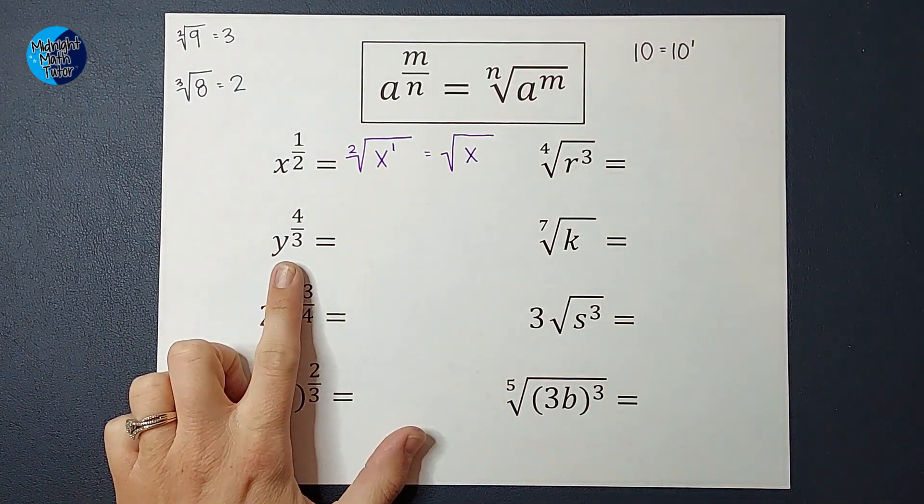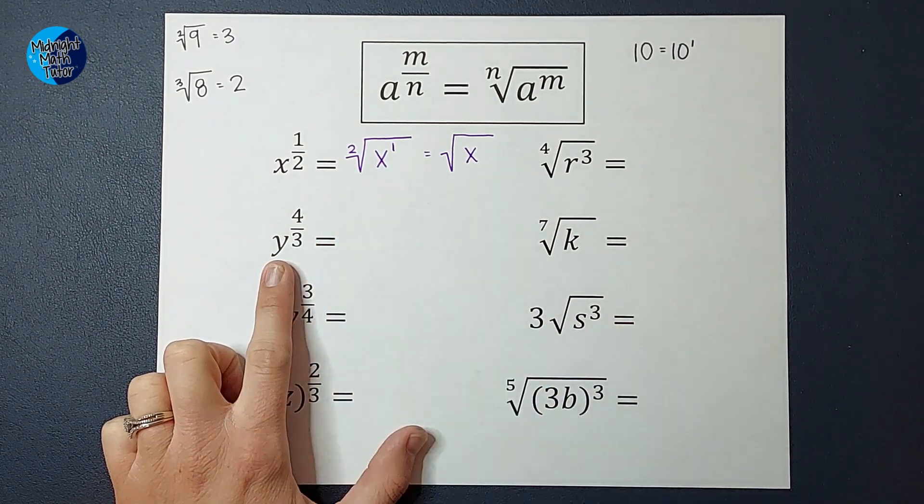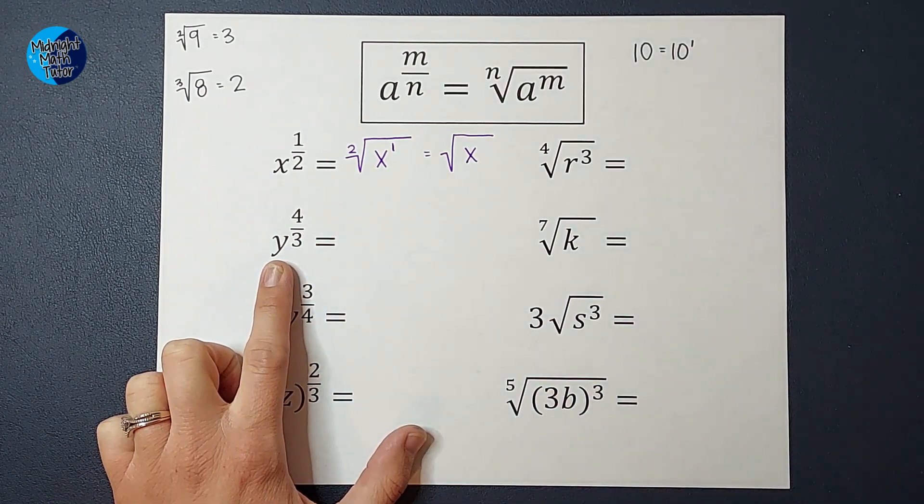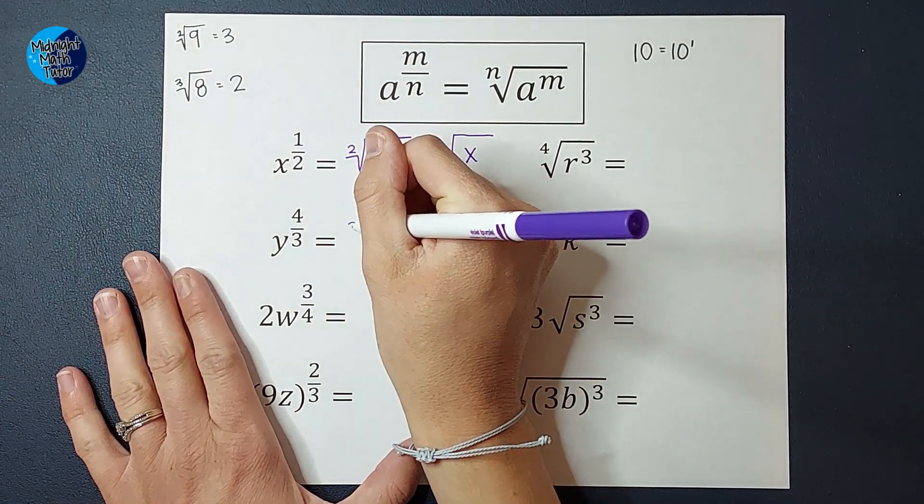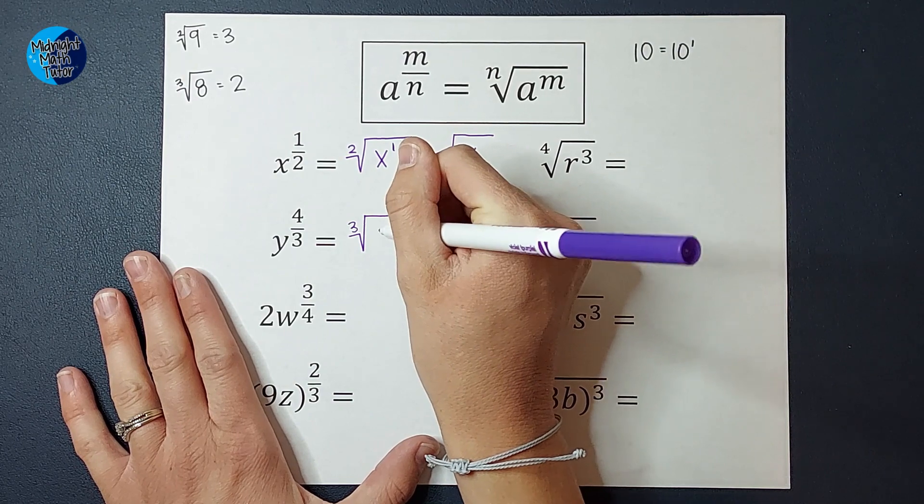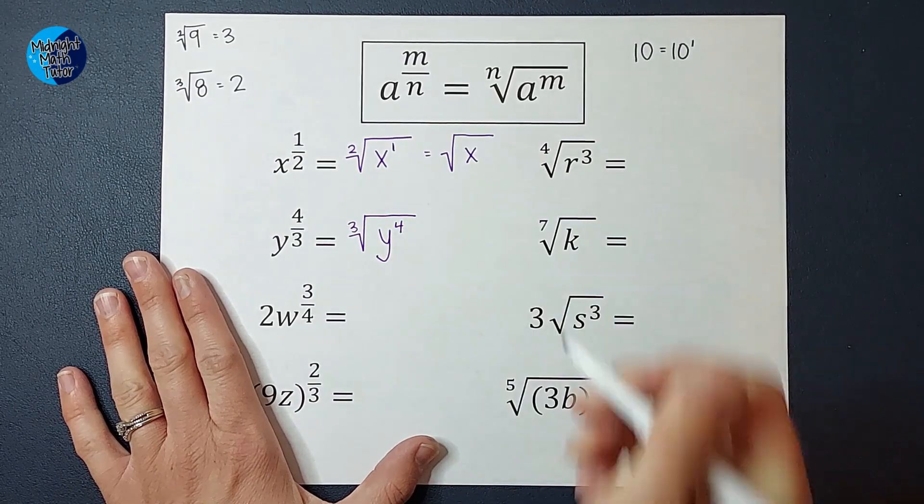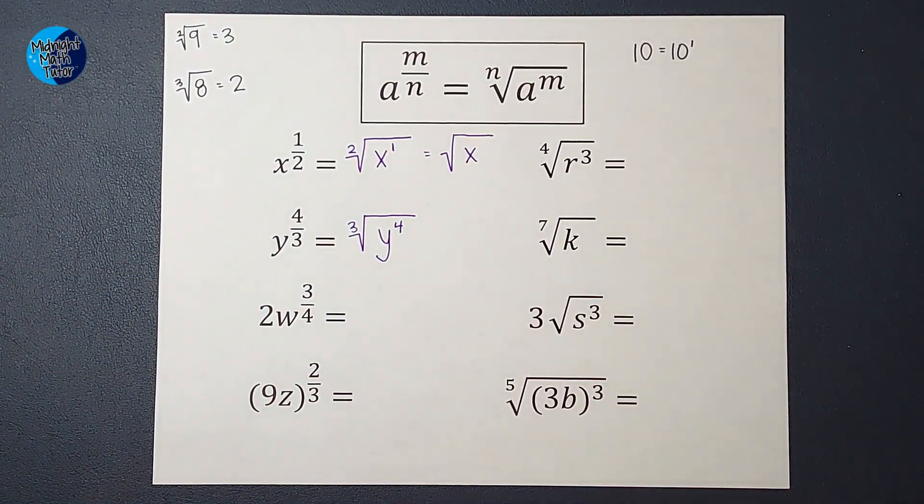Now let's go ahead and do it again. So this y to the 4 thirds power will be rewritten as the cubed root of y to the fourth power. Feeling okay about this?